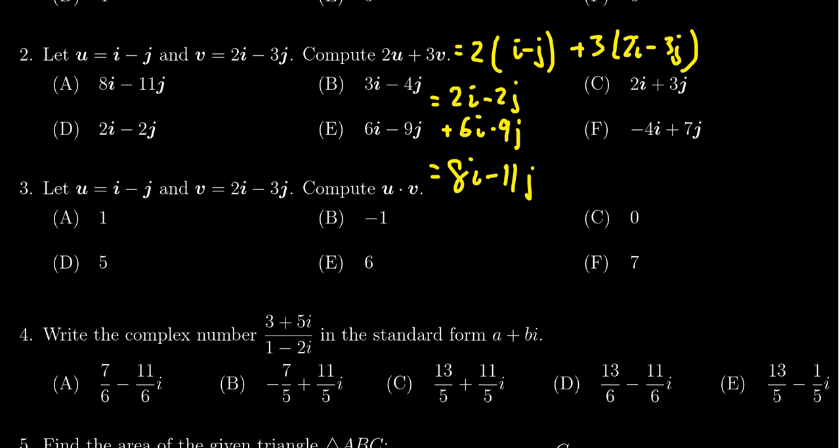And in which case, we then see that the correct answer is a, 8i minus 11j.